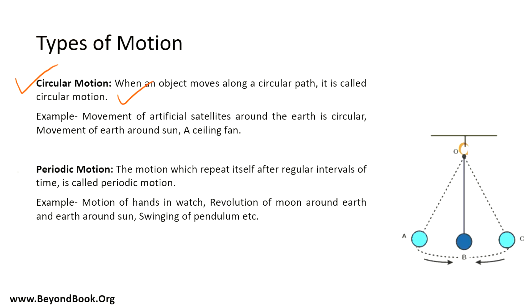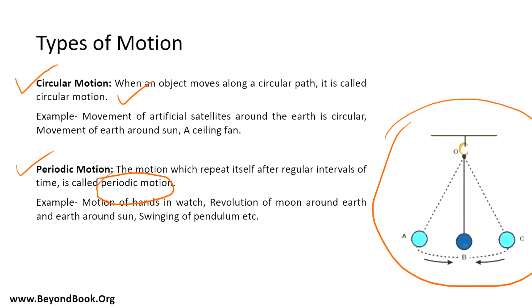The next type of motion is periodic motion. Motion which repeats itself after a regular interval of time is known as periodic motion. For example, a pendulum — it moves between position A and position C, with B as the middle position, swinging repeatedly at regular intervals of time. The swinging pendulum is therefore a periodic motion.